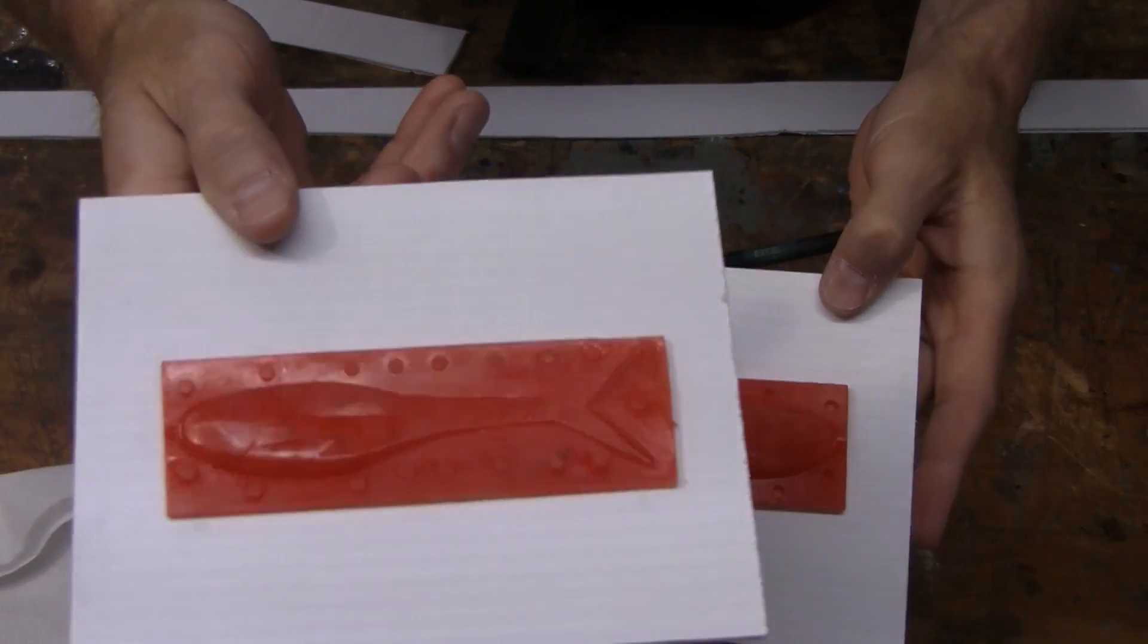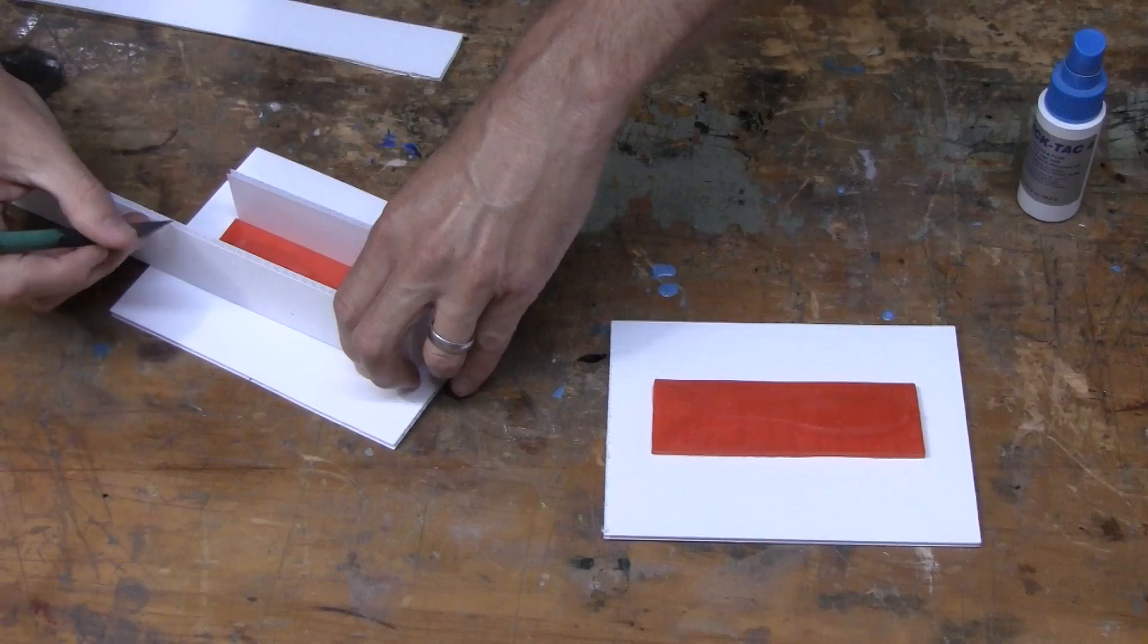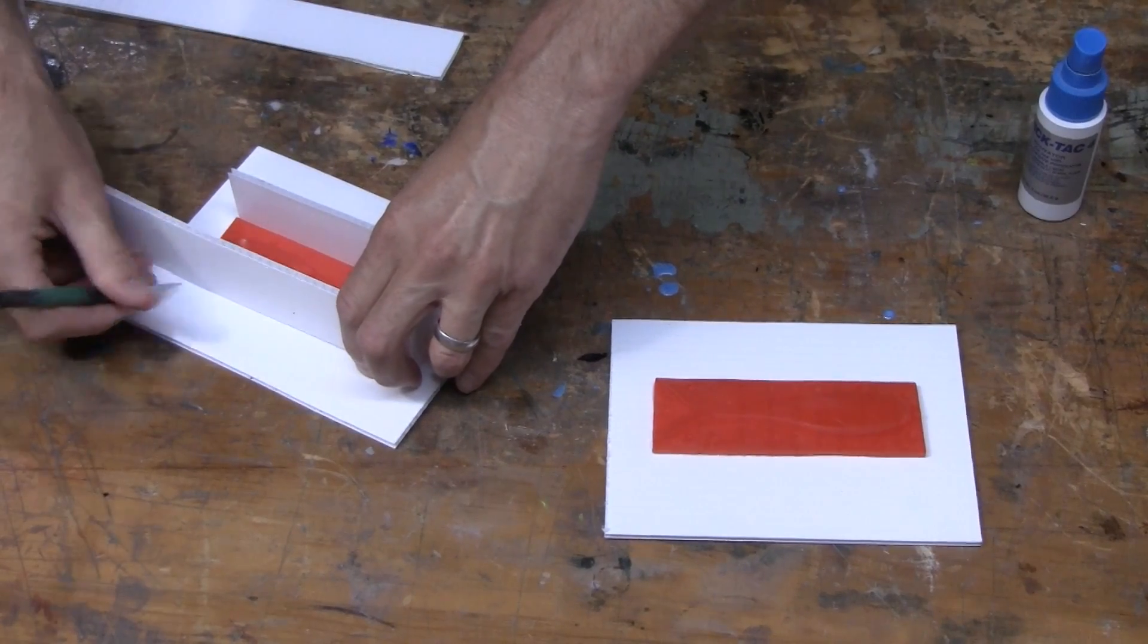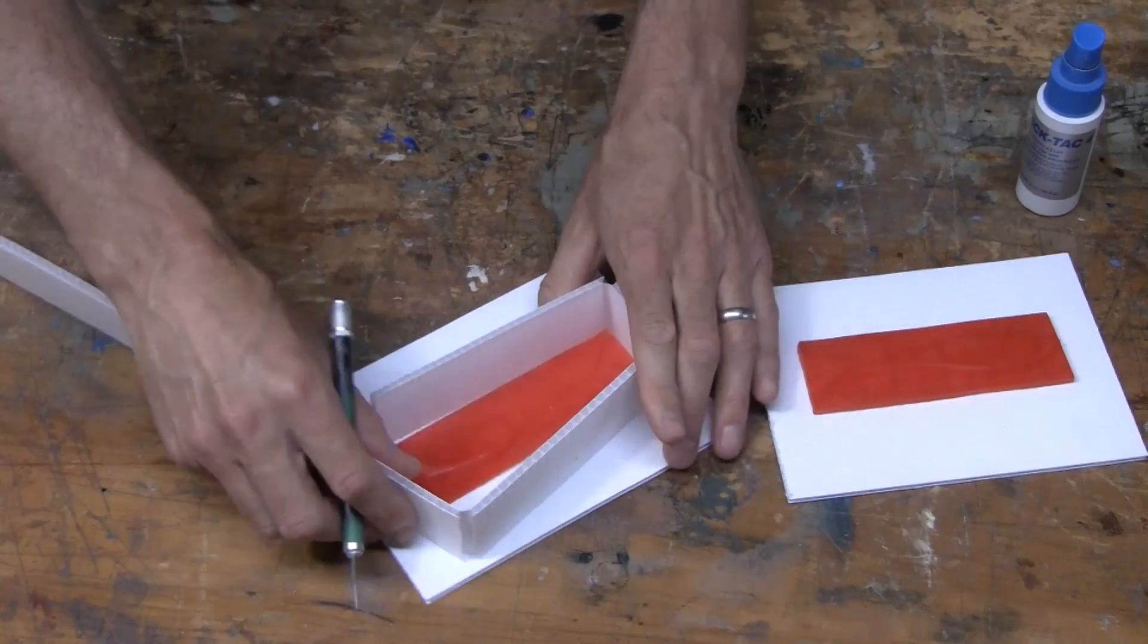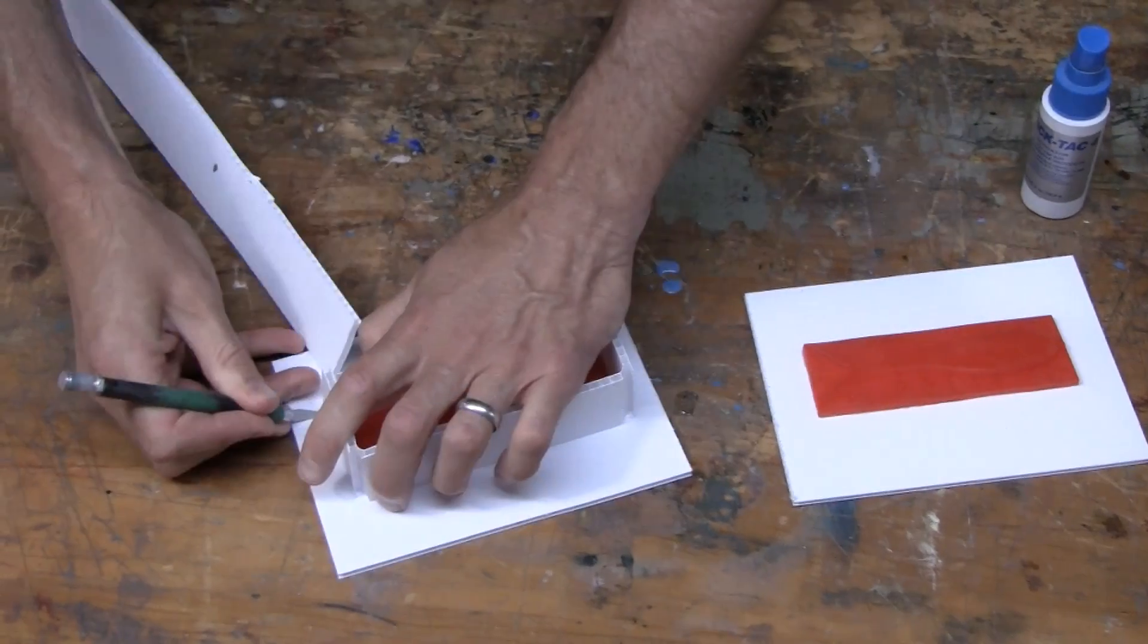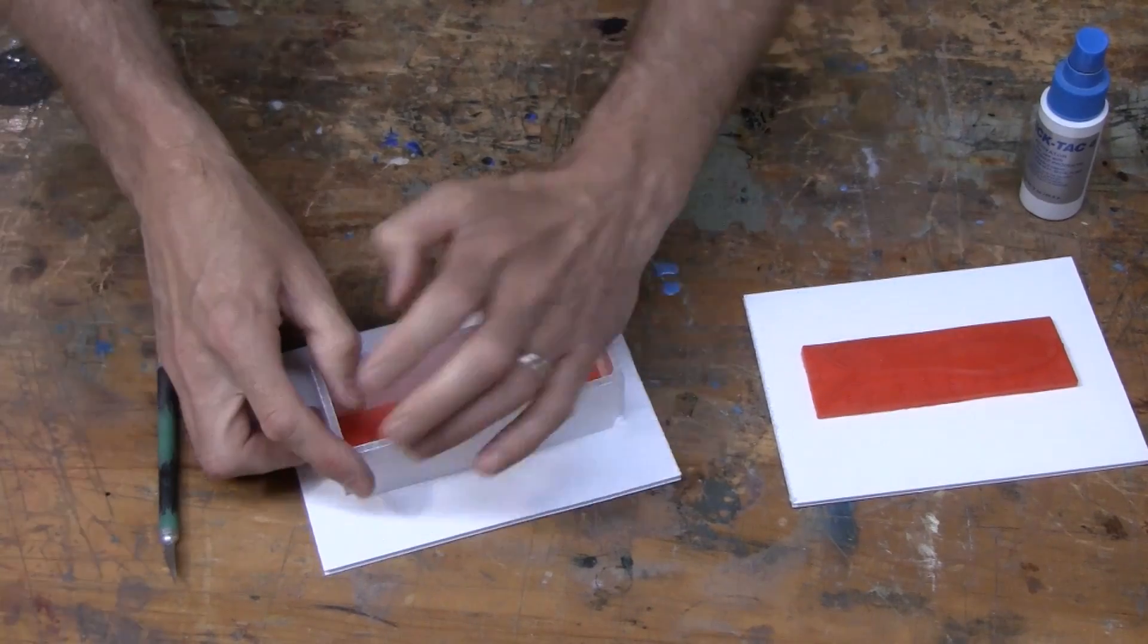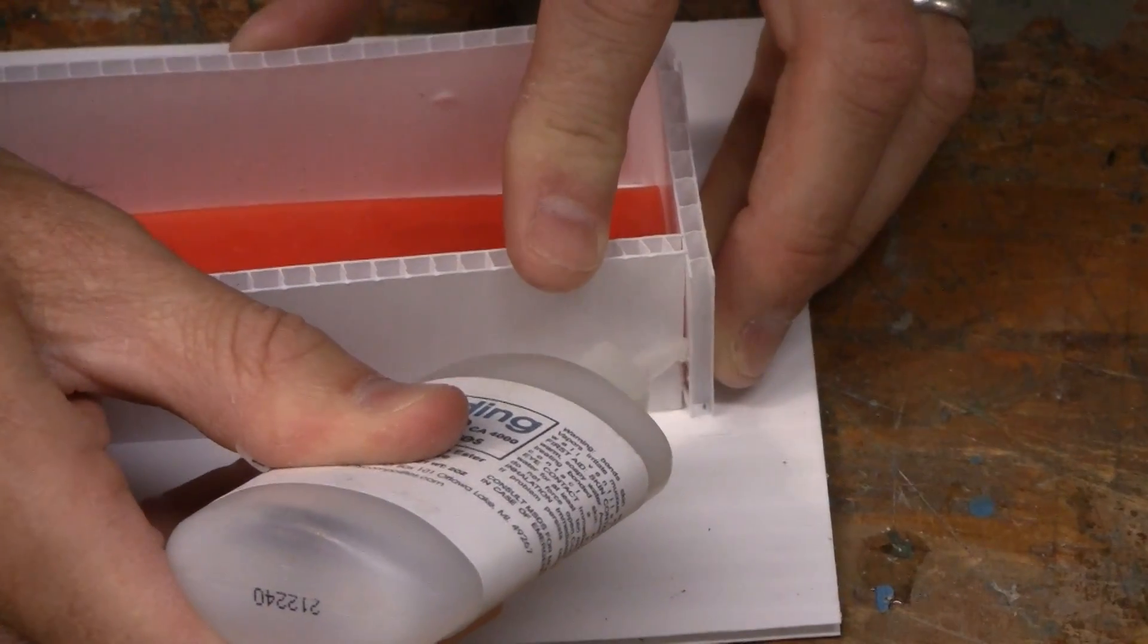Once we remove the 3D prints from the machine, we clean up the individual pieces and we're ready to mold them. This represents what we would normally see in clay, but gives us two perfectly symmetrical halves of our mold that will line up perfectly.